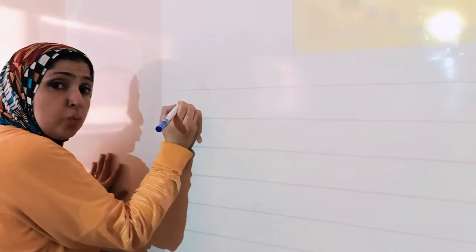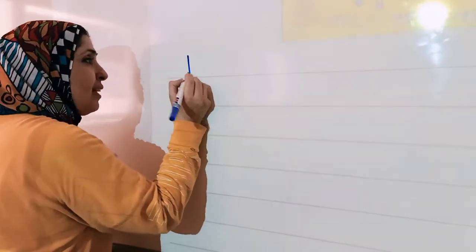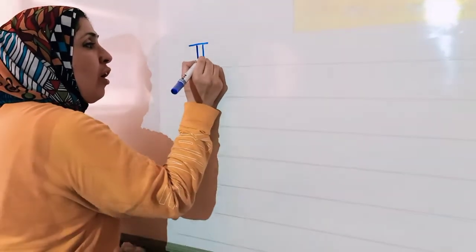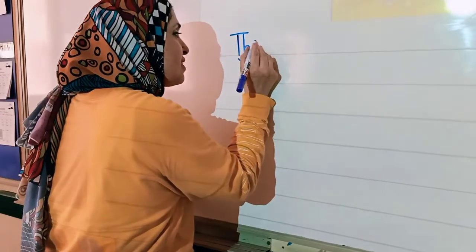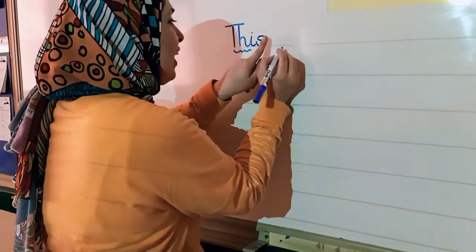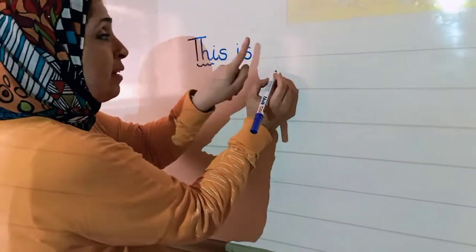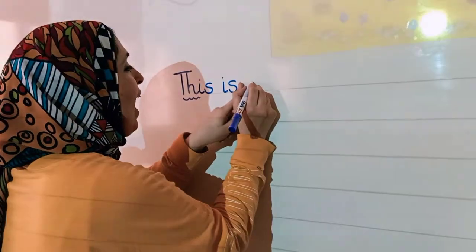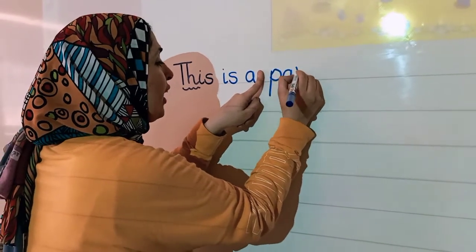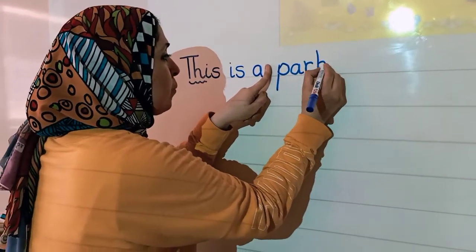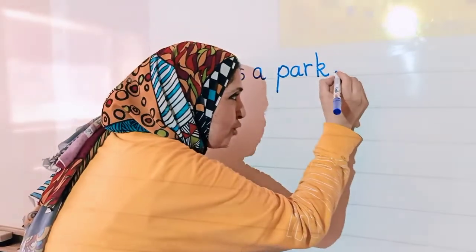First sentence I can write, this is a park. The first sentence should start with a capital letter. The, the. T and H are digraphs. The. This is, put my finger, remember, a, put my finger, park.